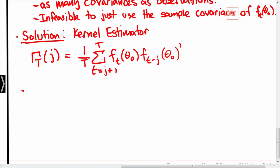We have just as many covariances as we have observations, which means it will be impossible to estimate all covariances consistently as the number of observations tends to infinity.